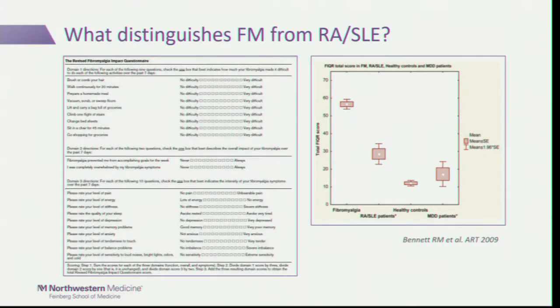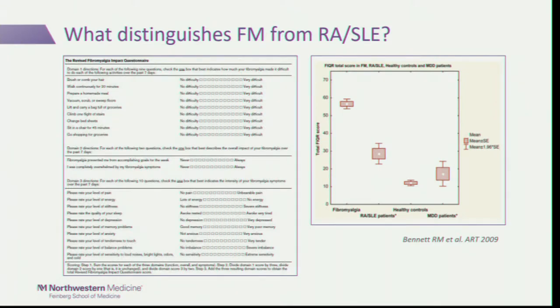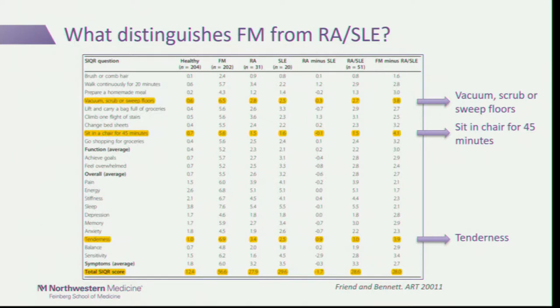An interesting 2009 study by Bennett tried to address this using the revised fibromyalgia impact questionnaire. As expected, fibromyalgia patients had the highest scores; RA and lupus patients had middling scores; and healthy controls had low scores. They went down to the item level to see what distinguished fibromyalgia patients from RA and lupus patients.